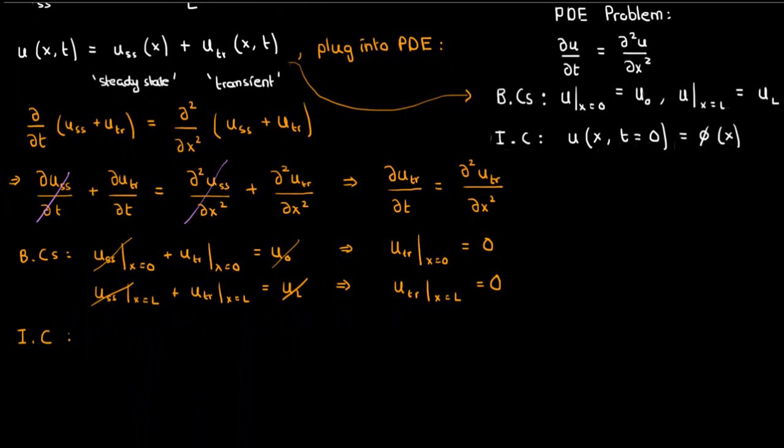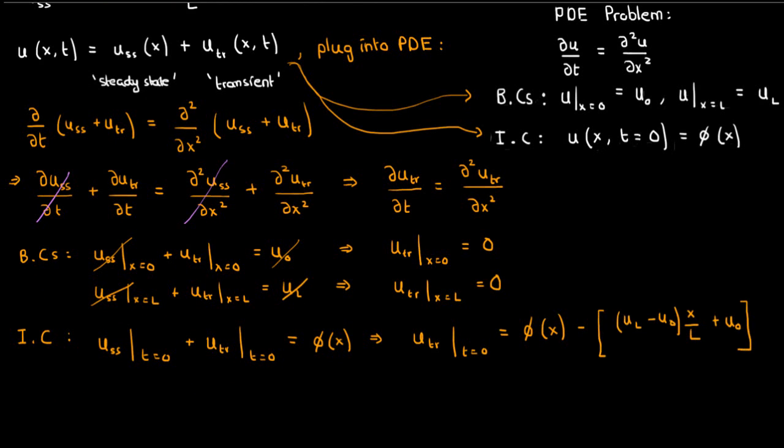Now that just leaves us with the initial condition. If we plug in our u, we'll see that u_ss at t equals 0 plus u_tr at t equals 0 equals phi of x, which means our transient solution will have the following initial condition after we substitute u_ss and subtract it from both sides.